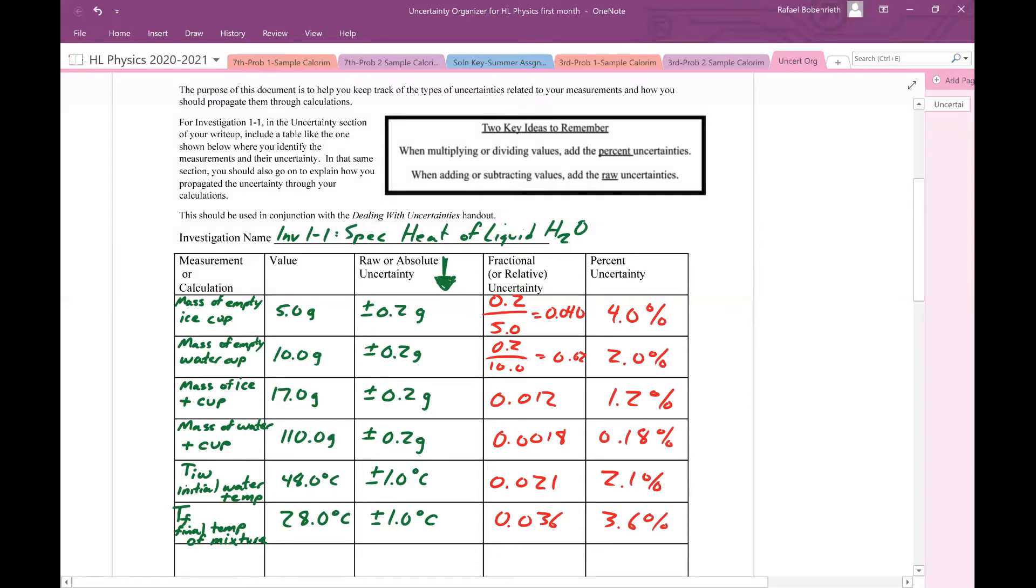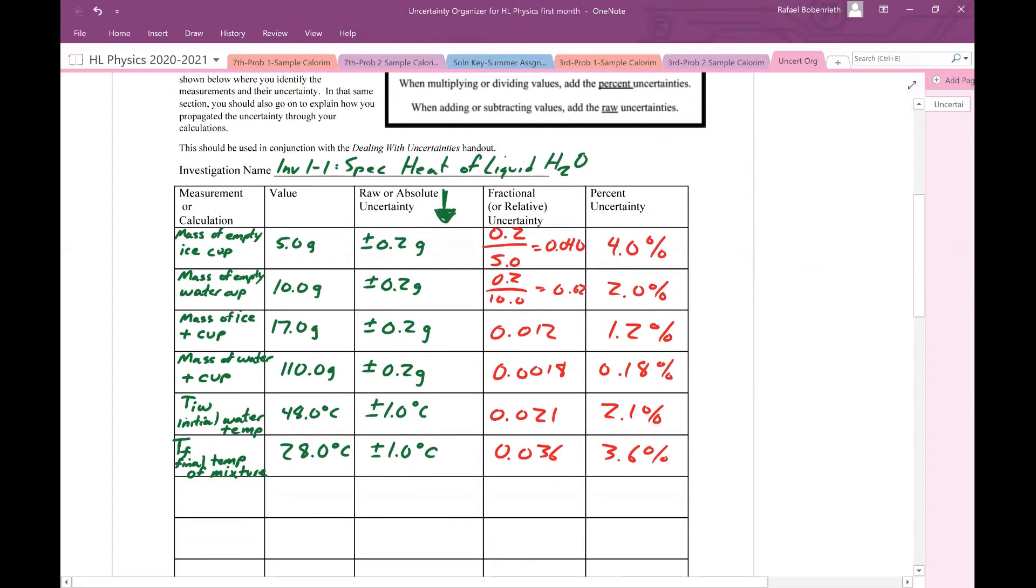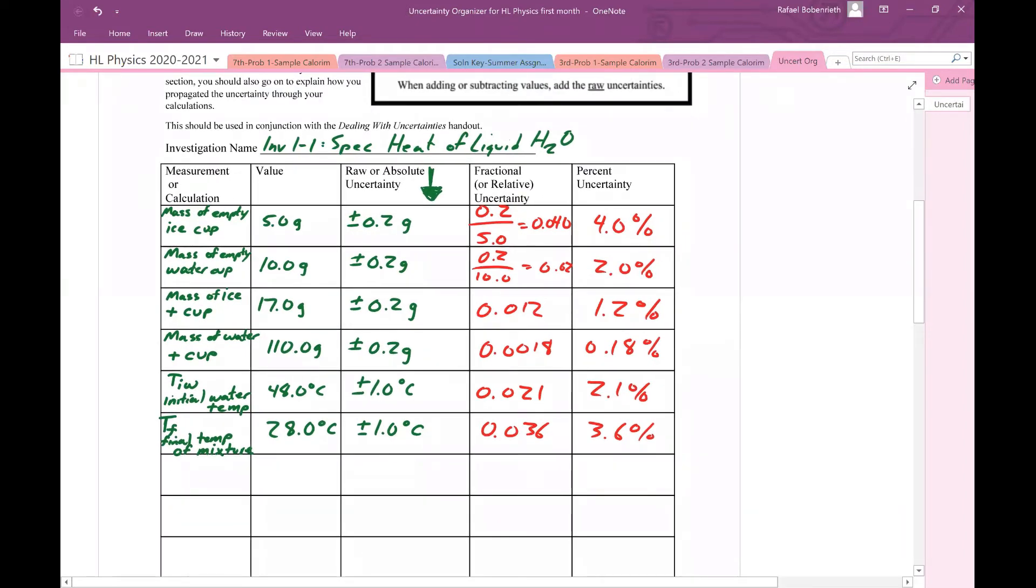When I did these calculations, I got numbers that look something like this. So with that in mind, the question is, how do we propagate uncertainty as necessary to figure out the uncertainty in our value for the specific capacity of liquid water, letter C?